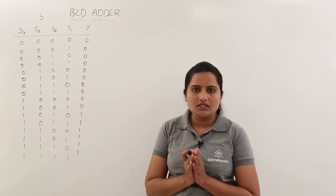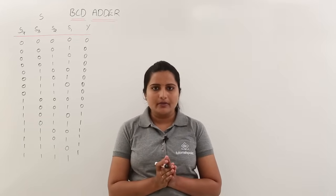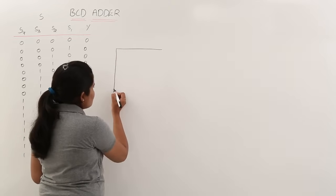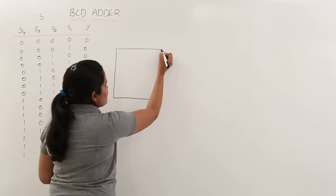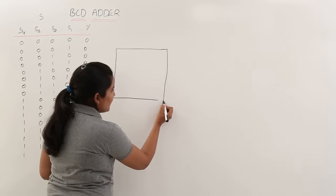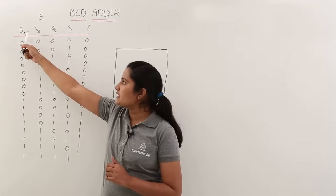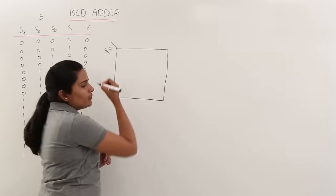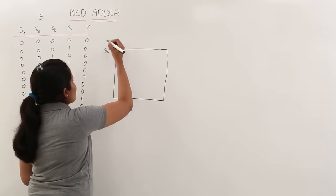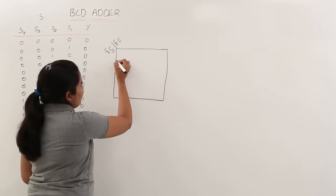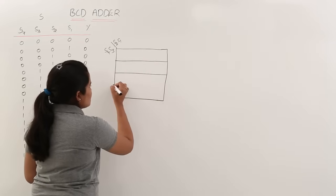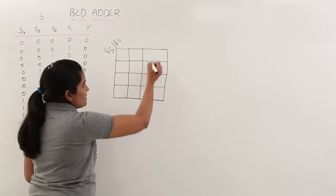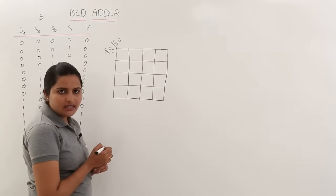For this functionality — detecting greater than 9 — we need a logic circuit, and definitely we need to use a Karnaugh map. I am considering a 4-variable KMAP because the output Y depends on 4 variables: S4, S3, S2, and S1. A 4-variable KMAP has 16 boxes, and I am separating them into groups of 4.